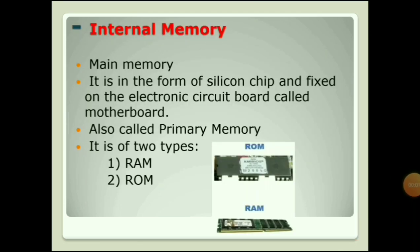First is internal memory. It is called the main memory of a computer. As its name suggests, it comes with the computer and is fixed inside the CPU. It is memory in the form of silicon chips fixed on an electronic circuit board called the motherboard. Silicon chips are made of chemical elements and can hold data. The motherboard is the main circuit board on which all chips are fixed, and it is inside the CPU box.